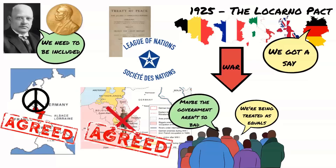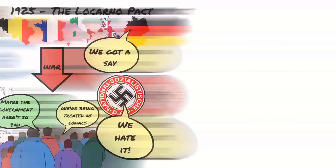However, not all parties supported the Locarno Pact. Some of the extremist parties hated it because they saw it as Germany giving in to the Treaty of Versailles.